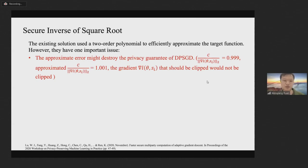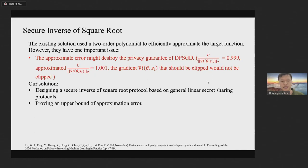For example, given a gradient SI whose L2 norm is slightly larger than C, that is C over L2 norm of SI is 0.999, in this case, SI should be clipped. However, if the approximated division result is 1.001 due to the approximation error of SMPC, SI would not be clipped and the security of DPSGD would be destroyed. To resolve this issue, we design a secure inverse of square root protocol based on general linear secret sharing protocols and the proven upper bound of the approximation error.